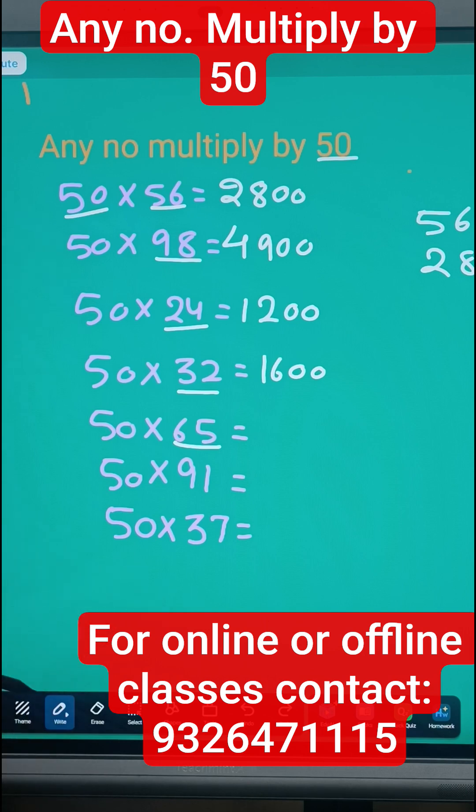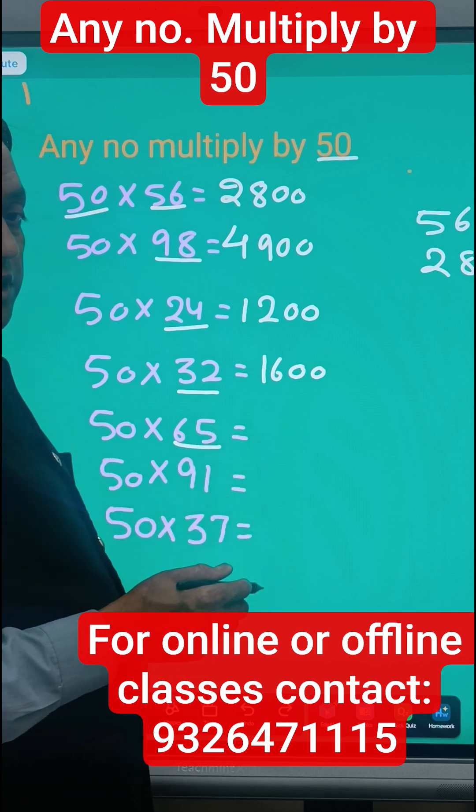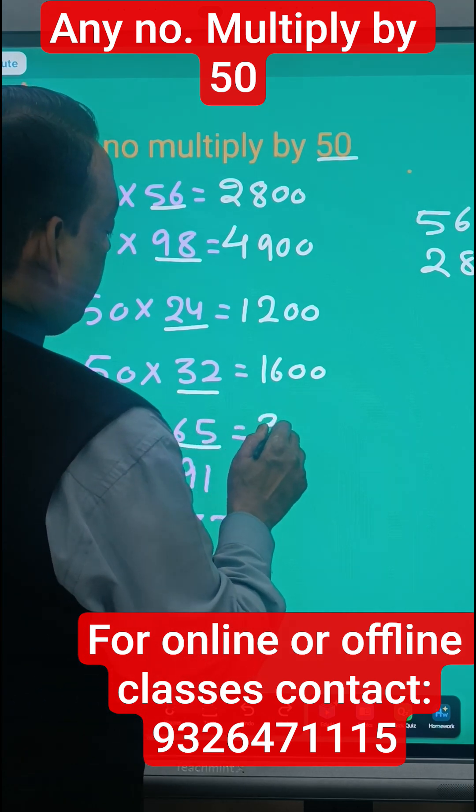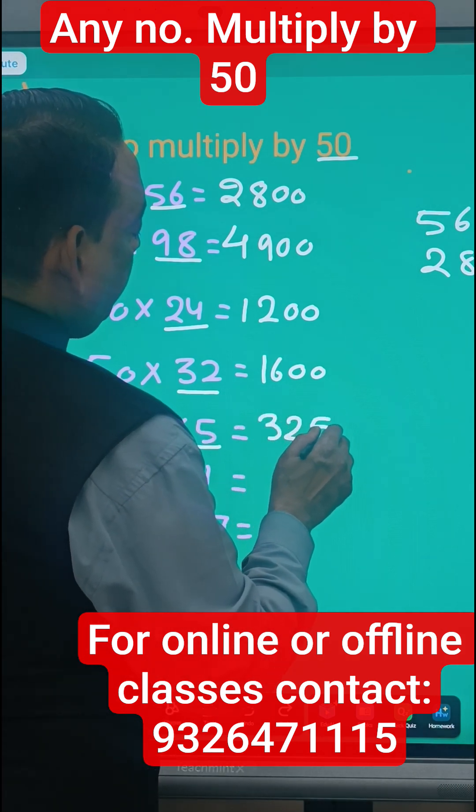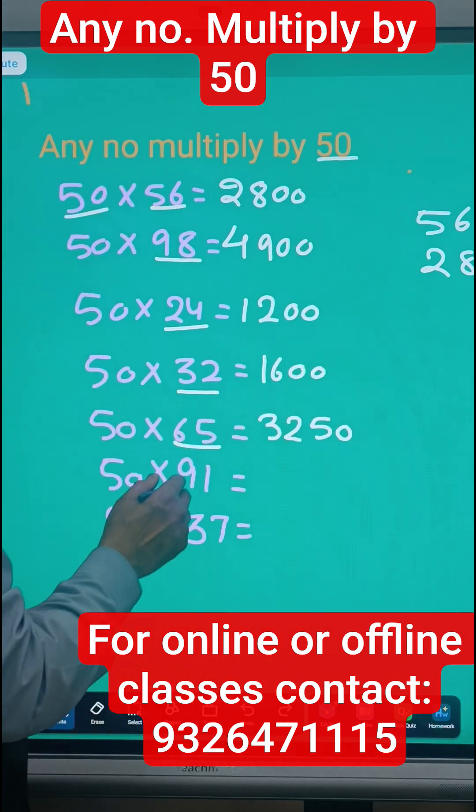Suppose the number is odd, so take the previous number. Previous number will be 64. 64 ka half is 32, and then just put the 50 instead of the 00, we'll do the 50 here. 91, we take 90. 90 ka half is 45, so 45 and 50.